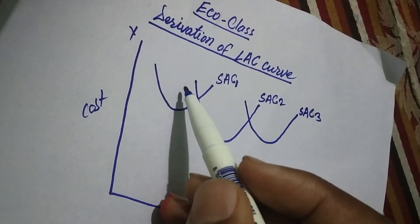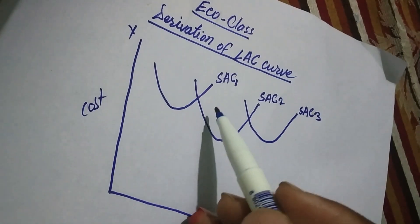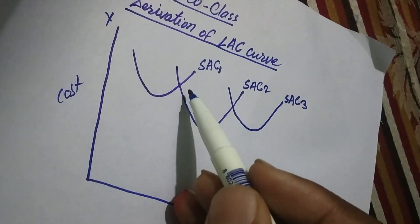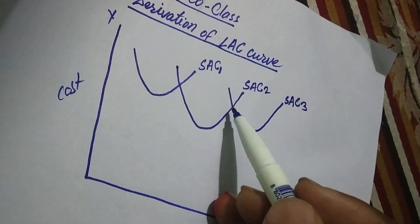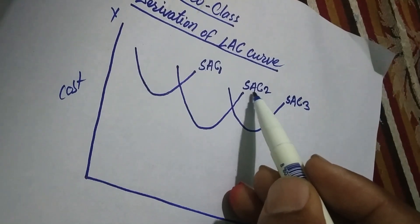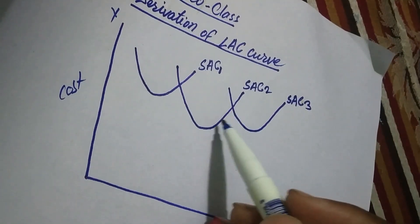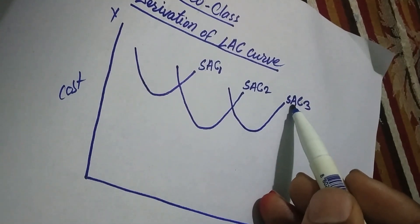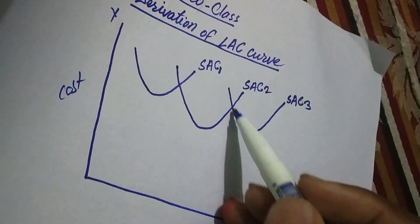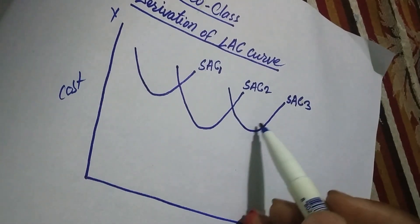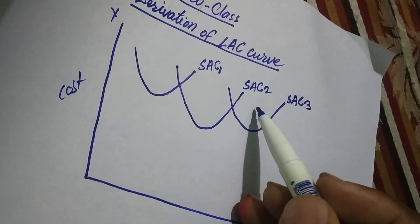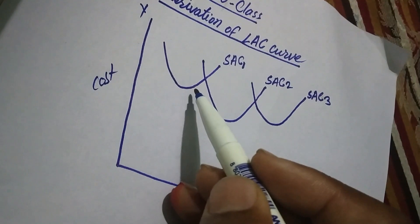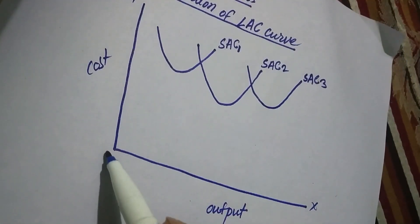This short-run average cost curve one represents the per unit production cost from the use of the first plant — the small size of plant. Short-run average cost curve two represents the per unit production cost from the use of the second, medium size of plant. And short-run average cost curve three represents the per unit production cost from the use of the third, bigger size of plant.